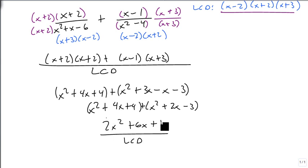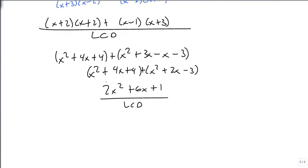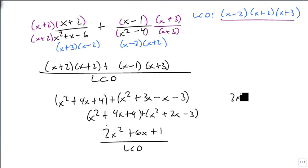We add this together and we get 2x squared plus 6x plus 1 over the LCD. And since there's no factors of 2 that add to 6, we can just simply rewrite our answer as 2x squared plus 6x plus 1 over x minus 2, x plus 2, x minus 3. And since nothing factors, this is our answer.